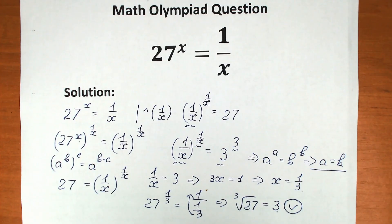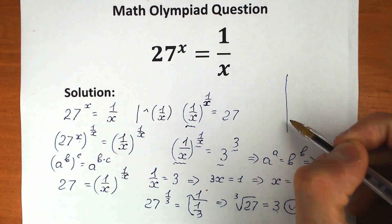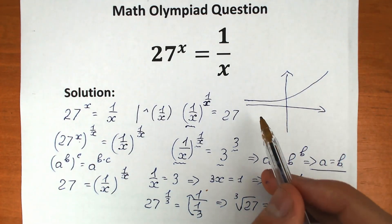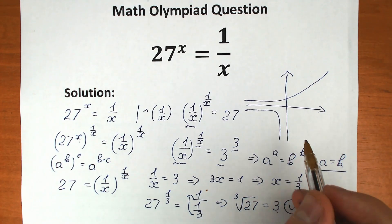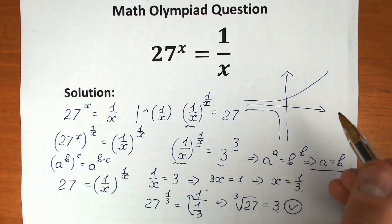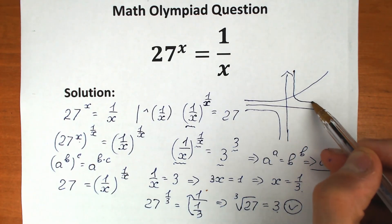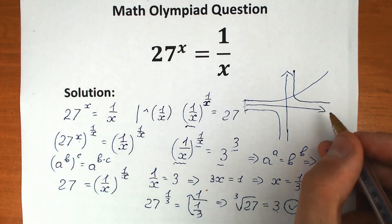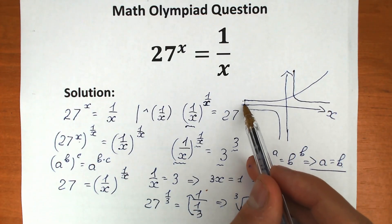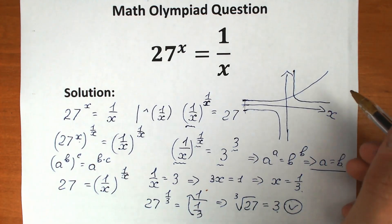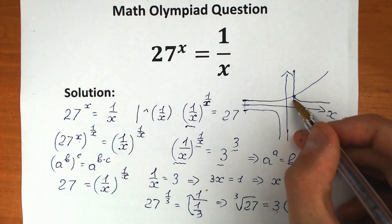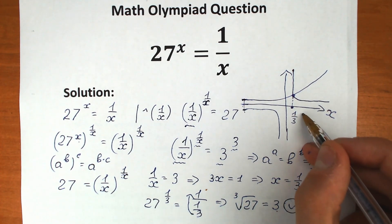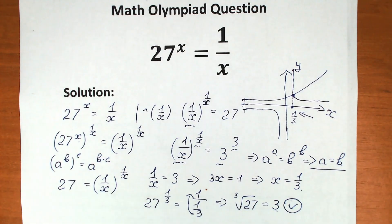For those who want to look at the graph, let's look at it. Here we have 27 to the x, which is our exponential function, and 1 over x. In the negative part this line does not intersect with the axes. And we have the same graph on the other side. As you can see, in the negative region the lines do not intersect because the hyperbola does not cross the x-axis. However, in the positive region we have a point of intersection, which gives us x equal to 1 over 3 — one and only one point of intersection.